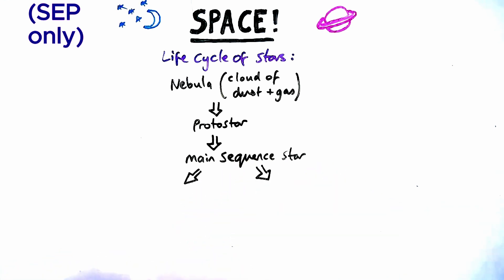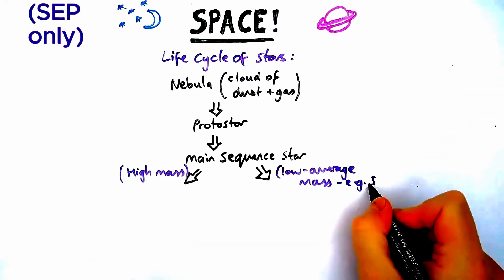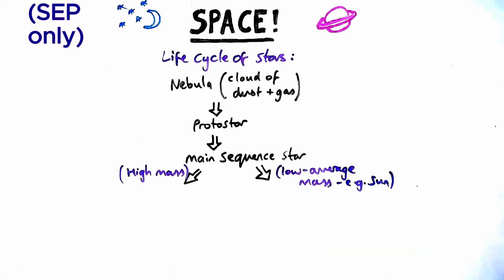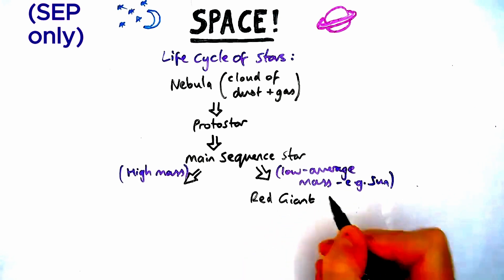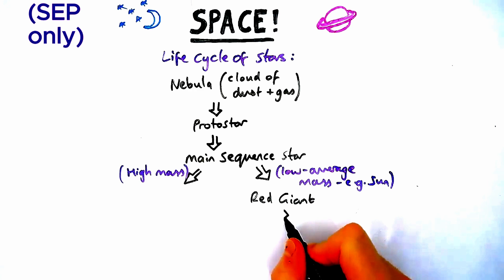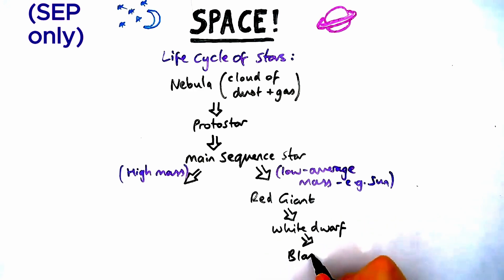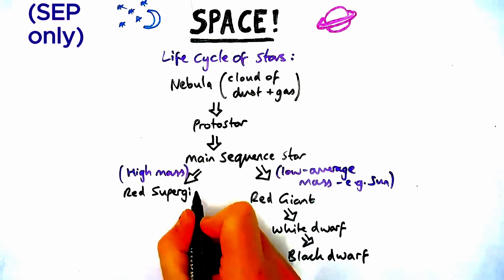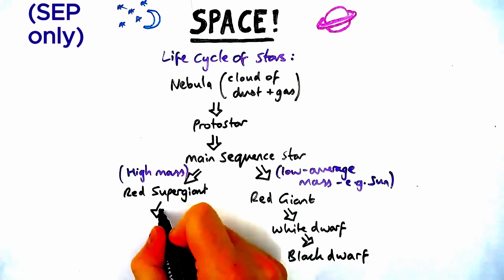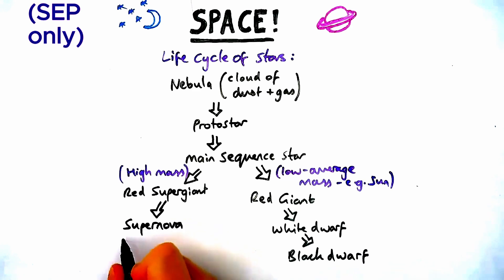The main sequence star, like our sun, can go one of two ways depending on if it's a high mass star or a low to average mass star. Low to average mass stars become a red giant, then a white dwarf, and after all radiation is emitted, a black dwarf. High mass stars become a red supergiant, then a supernova, and then either a black hole or a neutron star.